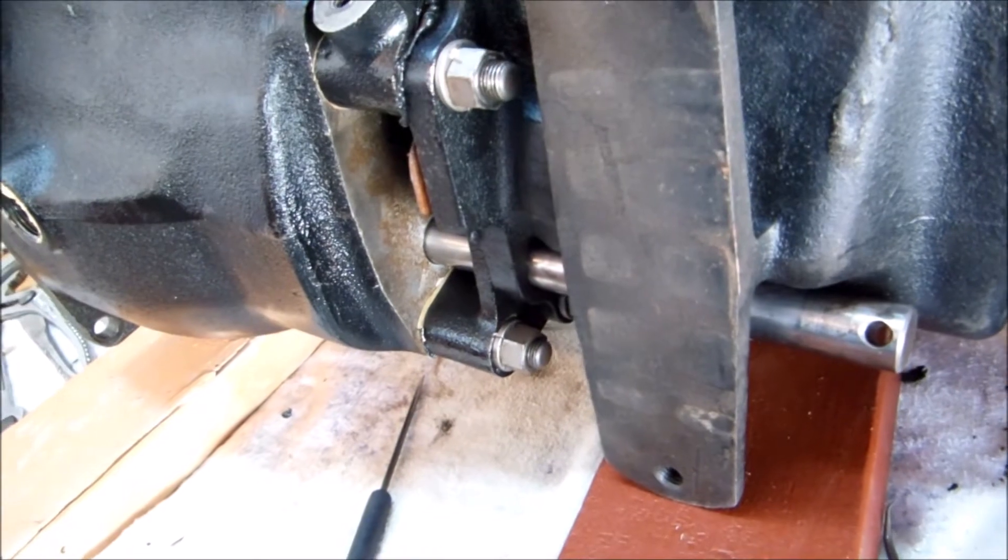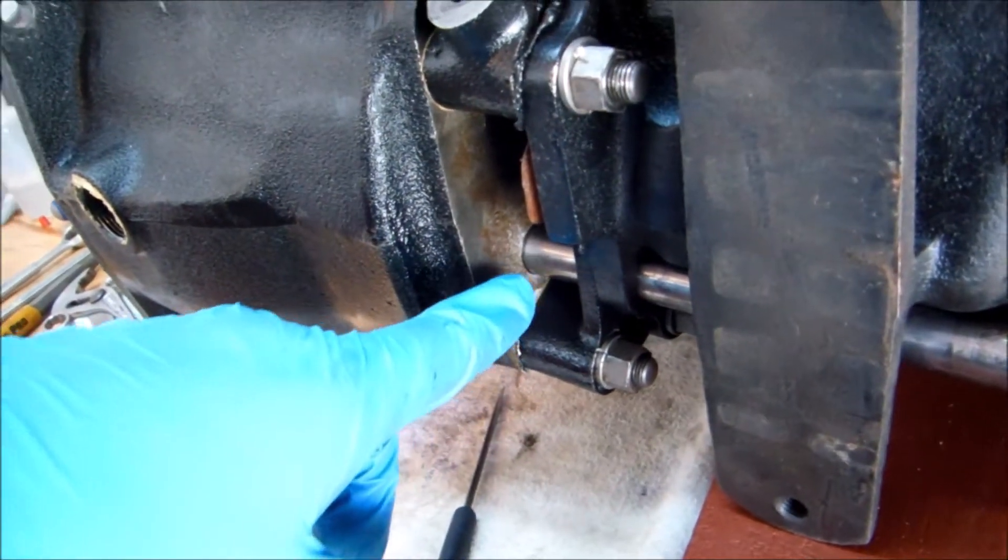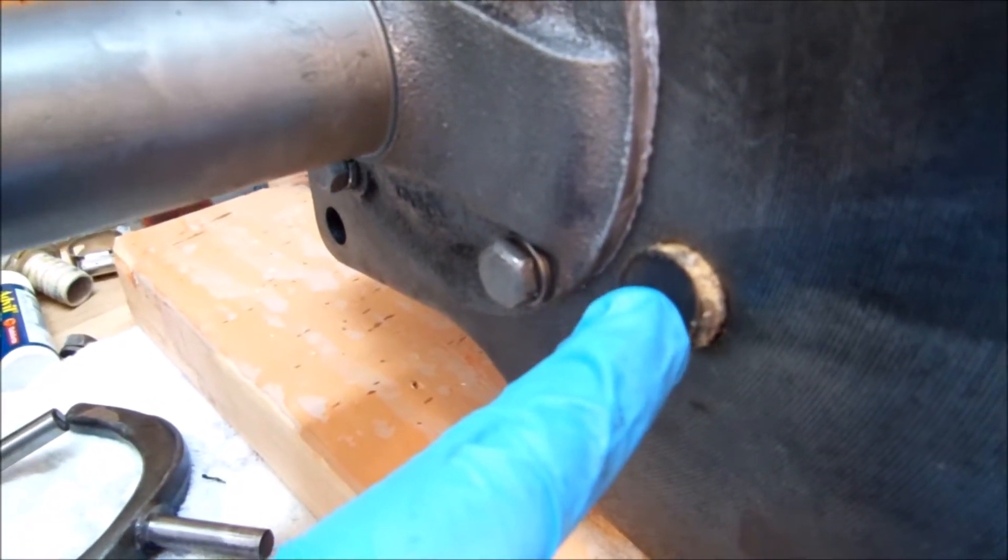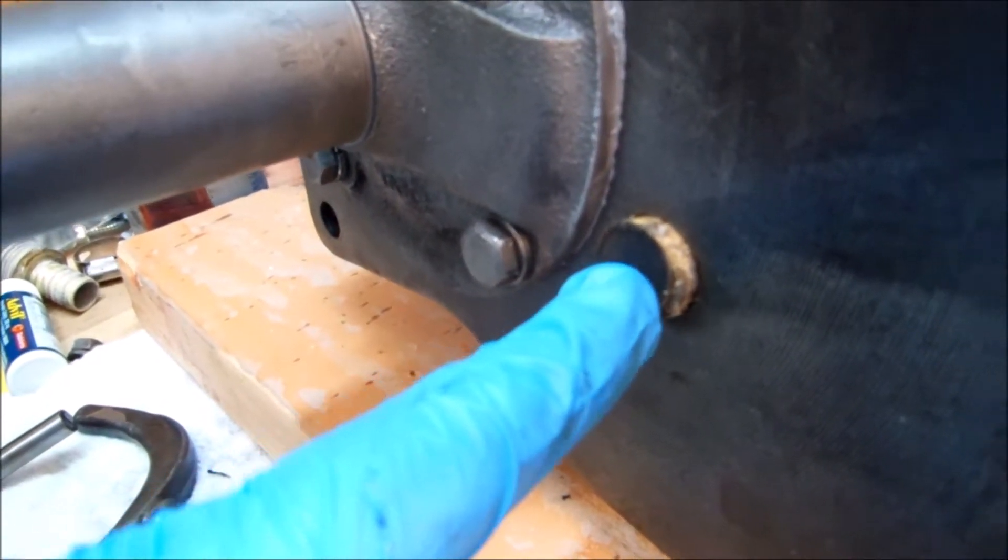Of course, there are needle bearings all the way around that shaft. We're driving out the wooden dowel, the dummy shaft that was holding everything in position—holding the bearings in and holding the washers.